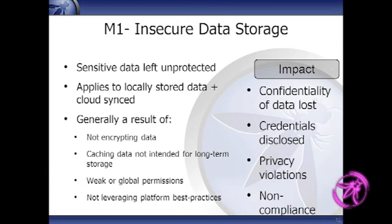First up: insecure data storage. This applies to stuff on the device, but also data that gets synced to iCloud or backed up to Android backup services — at some point that data ends up somewhere you don't control. People are going to lose their devices. The challenge is balance: if you don't cache anything, users on a plane can't access their data and will find another app. But there are compliance requirements — you shouldn't be storing credit card numbers or SSNs on the device.